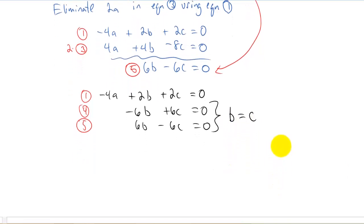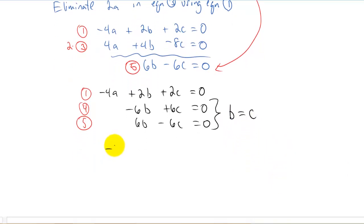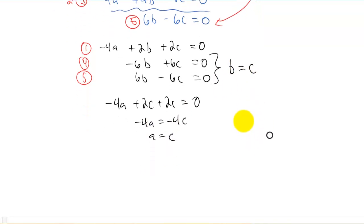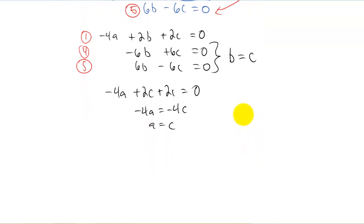Now if we take that b equals c and plug it in up here in equation one we get that a equals c as well. So because we had two equations it turned out to be the exact same thing, we have this degree of freedom and I'm just going to say I'm going to choose c to be one. That means b is going to be one and it also means a is going to be one. So the eigenvector associated with lambda equals six is going to be one, one, one in this case.